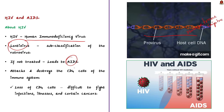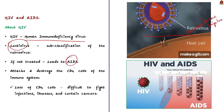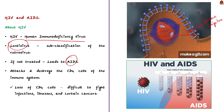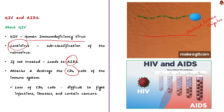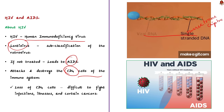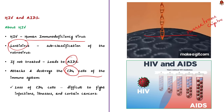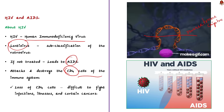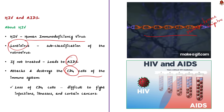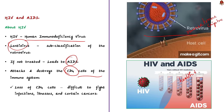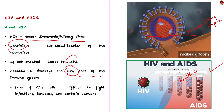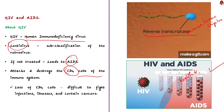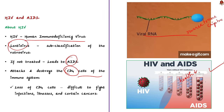HIV attacks and destroys the CD4 cells of the immune system. This loss of CD4 cells makes it difficult for the body to fight off infections, illnesses, and certain cancers. Without treatment, HIV can gradually destroy the immune system, causing health decline and the onset of AIDS. Look at this picture to have a better understanding.